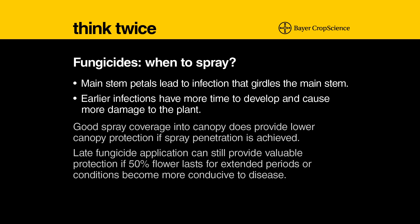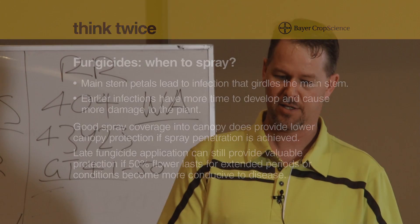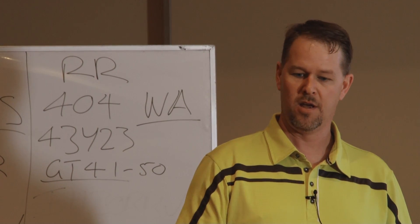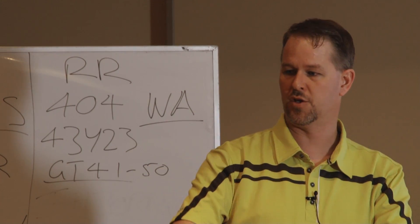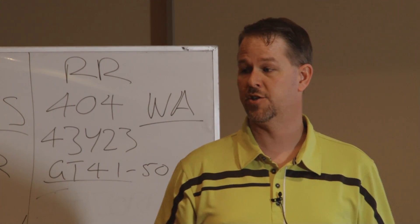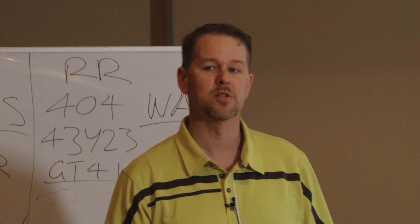Good spray canopy coverage is important. If you can get good coverage down into the canopy — which is easier to do at an earlier flowering period — and get spray down to some of those lower leaves so you have fungicide actually in the plant and even on the stems, when those infected petals are dropping, you've already got protection there. So that's pretty important as well.